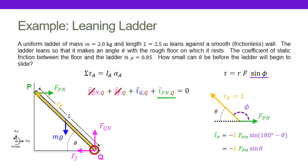Now I need the direction. Working it out, I see that the torque from the wall is actually in the clockwise direction, whereas the torque of gravity was in the counterclockwise direction. So the torque due to the wall is going to be negative. Now I've worked out the torque due to gravity and the torque due to the force of the wall. I put them together and set them equal to the moment of inertia times the angular acceleration — which is zero since it's in static equilibrium.